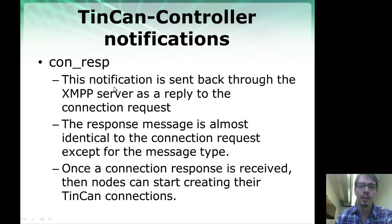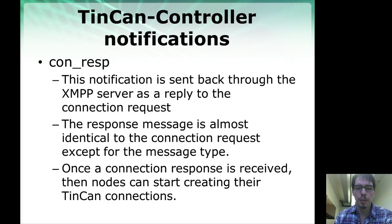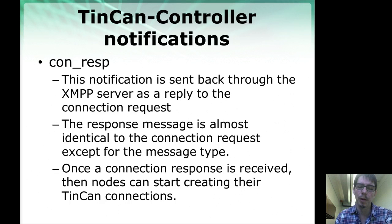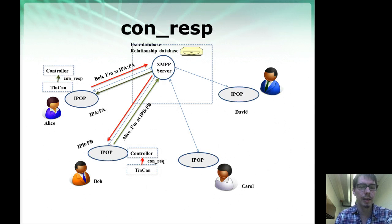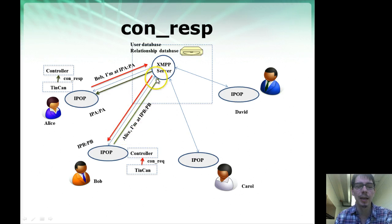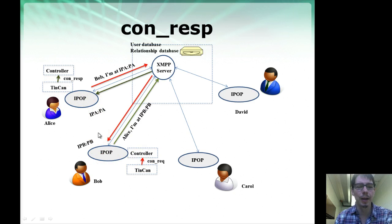Connection response is the other end of this request-response for connection or link establishment. It is again sent through the XMPP server and is almost identical to the connection request, but sent as a reply to it. So when Alice sent a message to Bob, if Bob replies to Alice saying yes, he wants to connect, this is a connection response. It comes through the XMPP server, goes to Alice, and goes up to the controller as a connection response notification — allowing Alice and Bob to begin to negotiate a connection with each other.